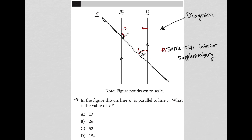Same 180 degrees. So basically, we have an equation X plus 26 equals 180. I can subtract 26 from both sides here, and I'm left with X is equal to 154 degrees.